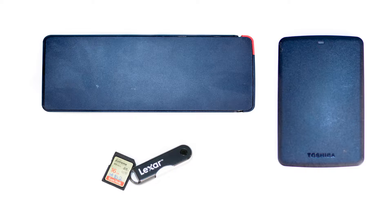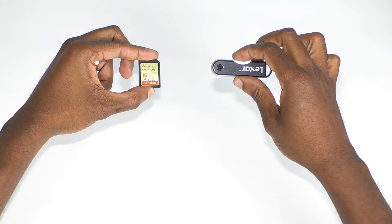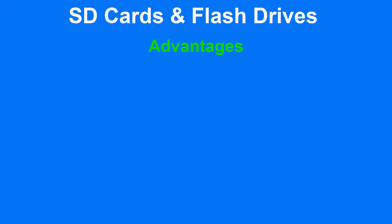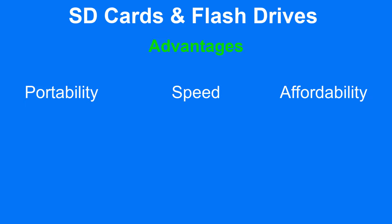The first two storage devices we are going to look at are SD cards and flash drives. Because of their size, SD cards and flash drives are extremely portable. They can transfer files at relatively fast speeds and are very affordable.